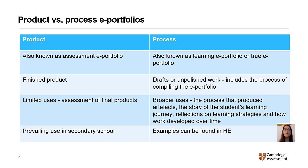This table compares the differences between product and process ePortfolios. Product ePortfolios are also known as assessment ePortfolios. They consist of the finished products and therefore have limited uses for the assessment of these final products, and these can be found in secondary schools. Process ePortfolios are also known as learning ePortfolios or true ePortfolios. As well as consisting of final drafts, they also include drafts or unpolished work, which can capture the process of compiling the ePortfolio.